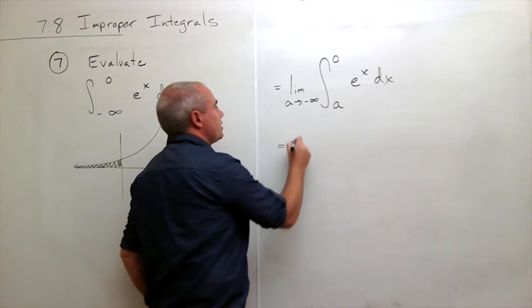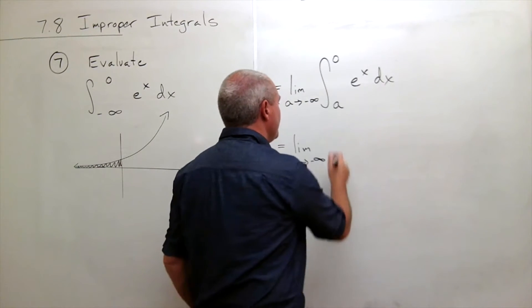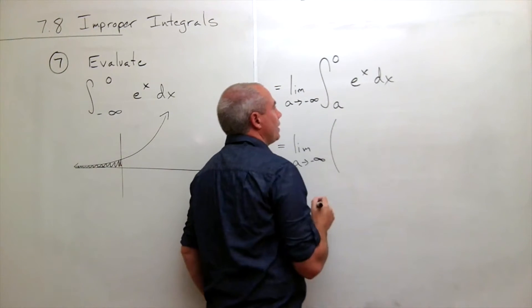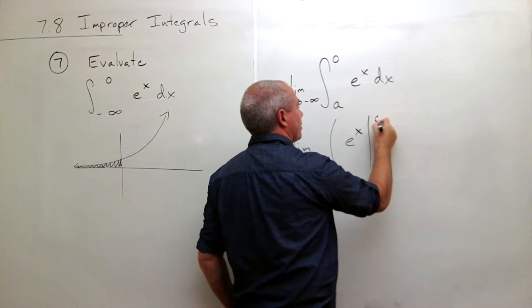So I still have this limit as a goes to minus infinity, and then the antiderivative of e to the x we know is e to the x, and then I'm going to evaluate that from a to zero.